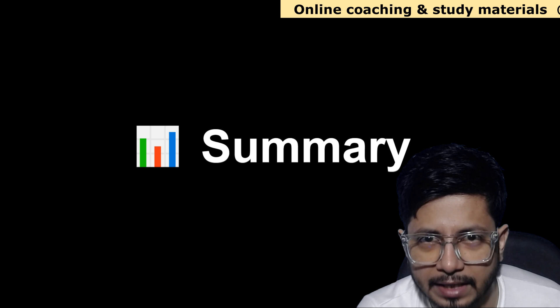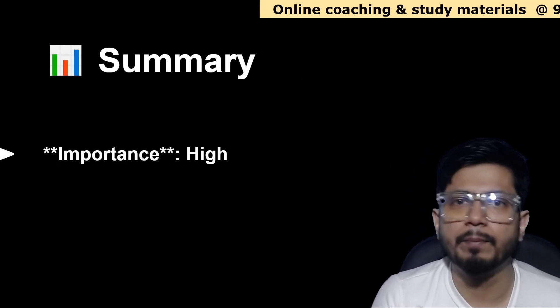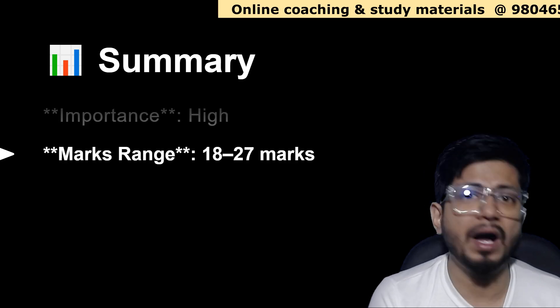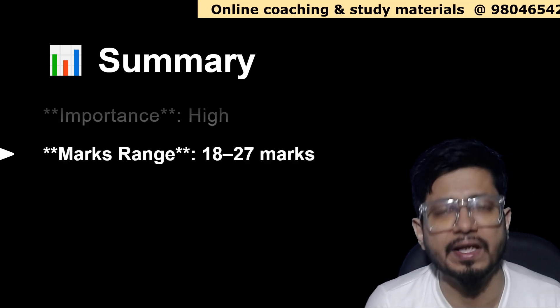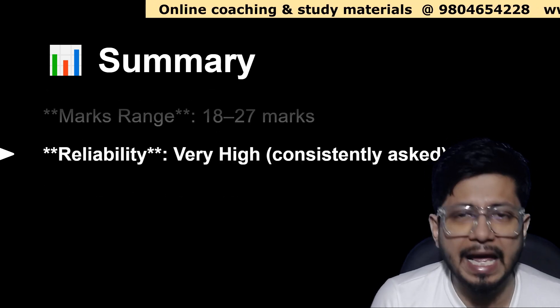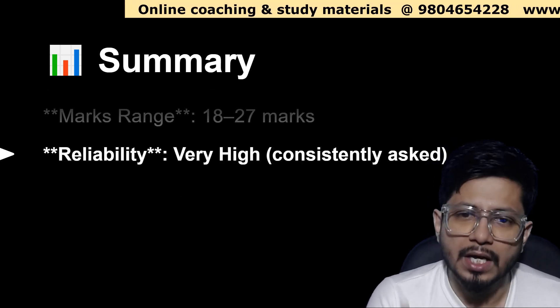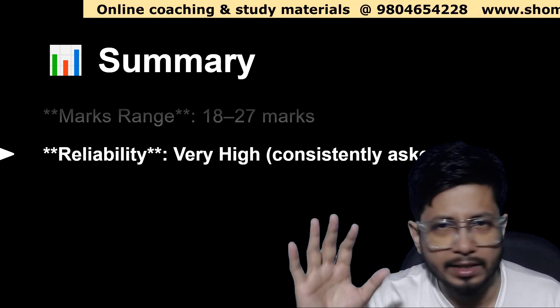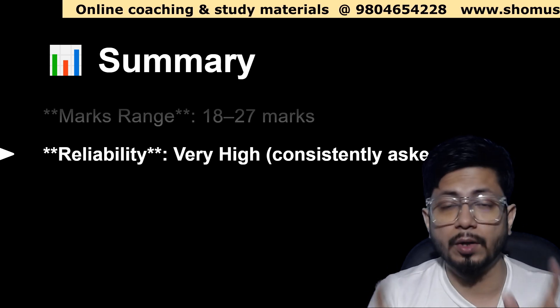The summary table that we want to discuss here shows the importance level for this unit 7 human physiology is high. The marks range is 18 to 27, so approximately 18 to 30 marks questions you can get from human physiology. Reliability for this unit is very high, consistently asking questions from human physiology in every single CSIR NET question paper.